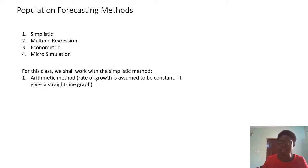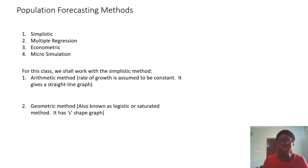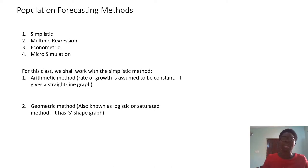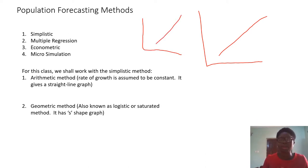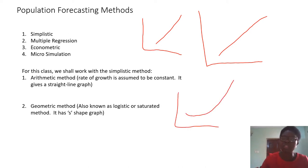We also have the geometric method, also known as the logistic or saturated method. It has an S-shape. If you're talking about the arithmetical method, having a constant growth rate gives you a straight line. But when you're looking at the geometric method, which has an S-shape, it means there is a deviation in the growth rate — the line is not totally straight. That is the geometric method.